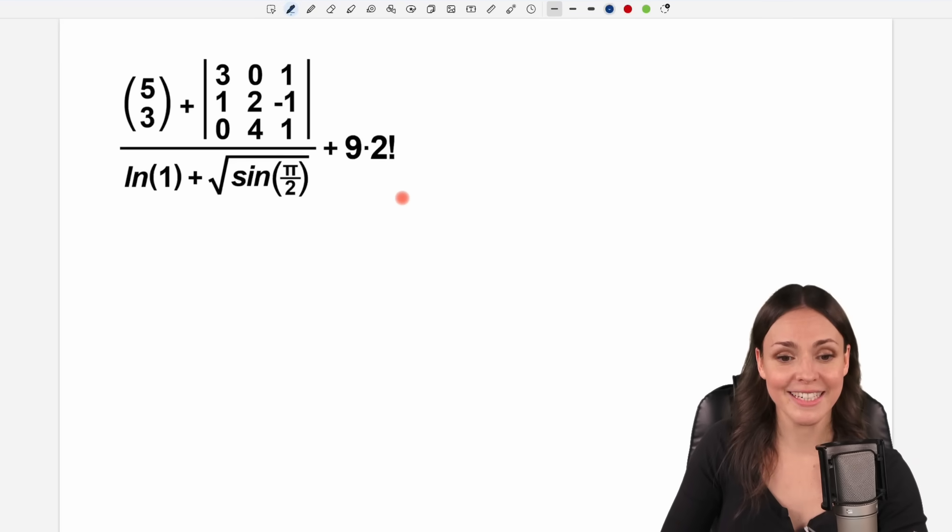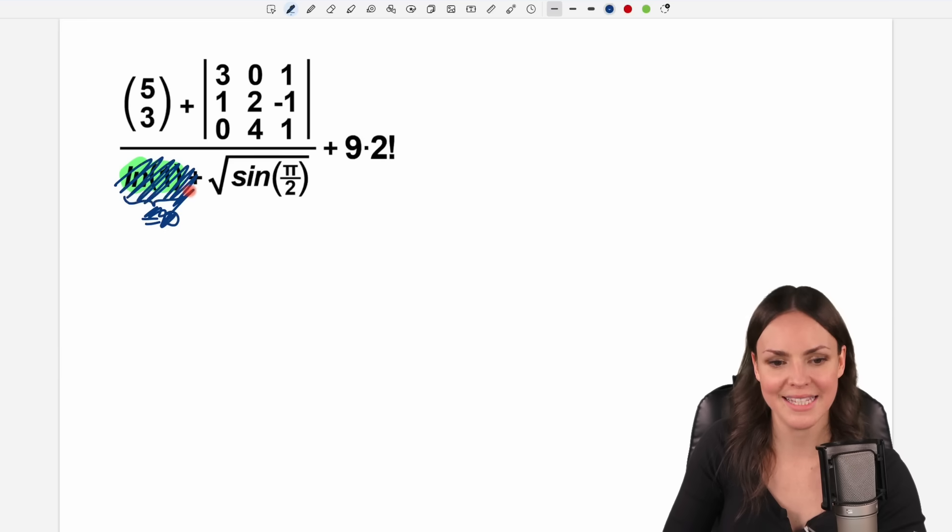So my expression looks like this now. Still a lot of stuff in here. Maybe we start with the logarithm here first. ln of 1 is always just equal to 0. So here we have 0 plus this expression, we can just erase this. Then we have 1 problem less. What's next? Maybe here, 9 times 2, exclamation mark. What is the exclamation mark? This is the factorial.